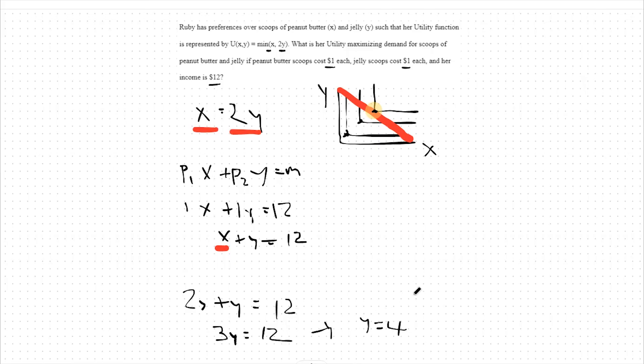If y equals 4, we can plug back into x equals 2y and get that x equals 2 times 4 or 8. This means, optimally, we should purchase 8 scoops of peanut butter and 4 scoops of jelly.